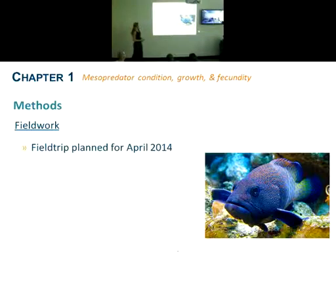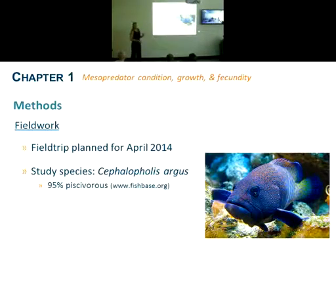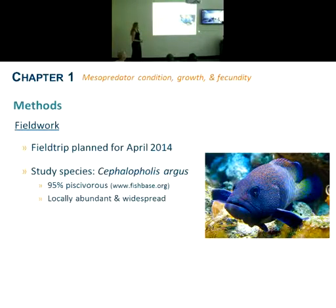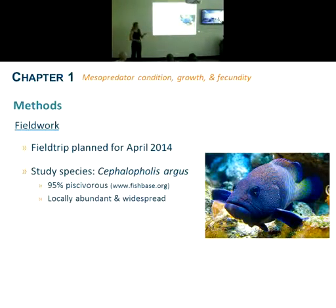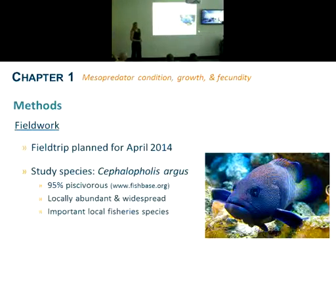The field work for this chapter will be carried out in April next year. The study species I've chosen is Cephalopholis argus. The reason for this is that it's 95% piscivorous, meaning it's very directly dependent on the reef fish community. It is also locally abundant and widespread, as seen from the long-term monitoring data, which means it can be sampled across all sites, and hopefully this will not have a substantial impact on the local abundance. It's also an important local fishery species, with great benefits to local management.